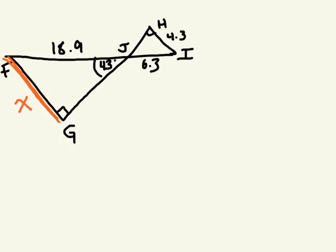So one way to do this is to redraw your triangle so that they're in the same position. So I'm going to redraw triangle F, and I'm going to label it F. This is where F is, G, and J. Now we want to flip triangle HIJ so that it's in the same position, right?